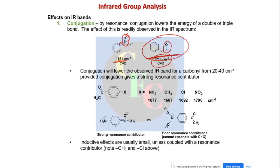The carbonyl band is also influenced by substituents. An electron-withdrawing group like nitro will make the C=O bond stronger, shifting it to higher frequency, while electron-donating groups will weaken the bond and shift it to lower frequency.